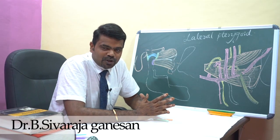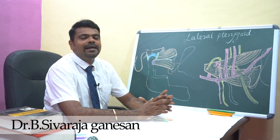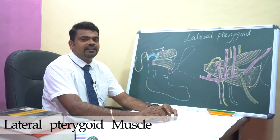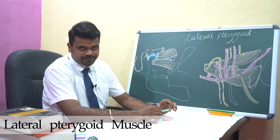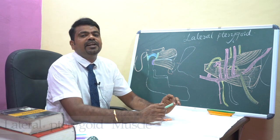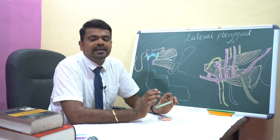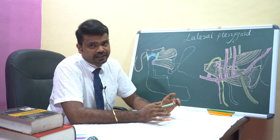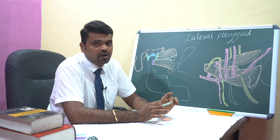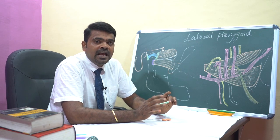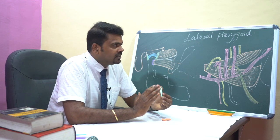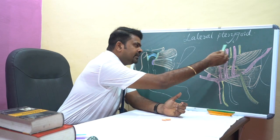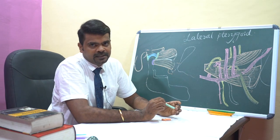Hello everyone, welcome to my YouTube channel. In this session, I am going to talk about the lateral pterygoid muscle. The lateral pterygoid muscle is a key muscle in the infratemporal fossa. Why is it called a key muscle? Because we have many important structures present around the lateral pterygoid muscle.